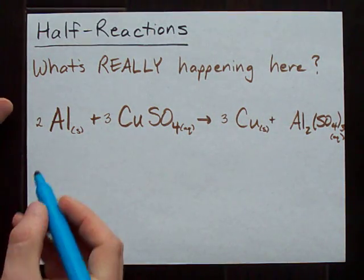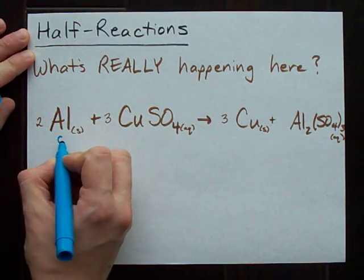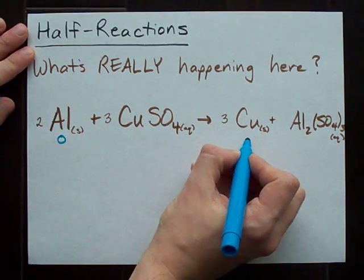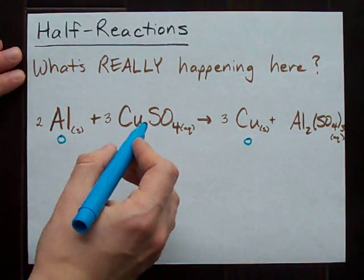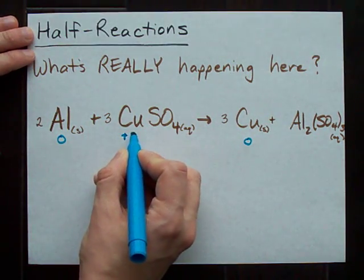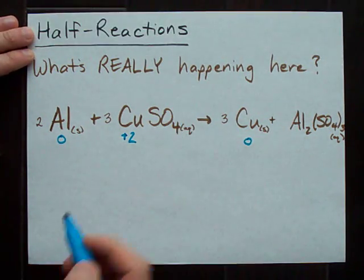You know how to find oxidation numbers. The oxidation number for an element in its standard state is zero and so is copper also has an oxidation state of zero. The sulfate anion has a charge of minus two, which means this copper has a charge of plus two to counteract it since the whole thing is uncharged.